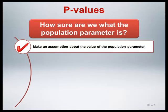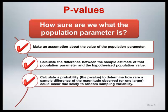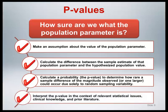For the p-value, we start by making an assumption about the value of the population parameter. Next, we calculate the difference between the sample estimate of that population parameter and the hypothesized population value. We then calculate a probability to determine how rarely a discrepancy this large or larger could occur due solely to random sampling variability. The smaller this probability is, the more evidence we have that the hypothesized population value is actually incorrect. We then interpret the size of this probability — the p-value — in the context of relevant statistical issues, clinical knowledge, and prior literature.